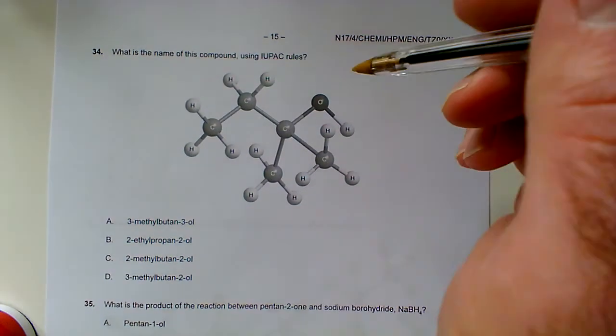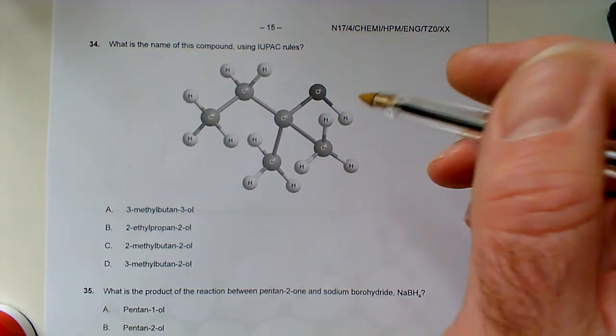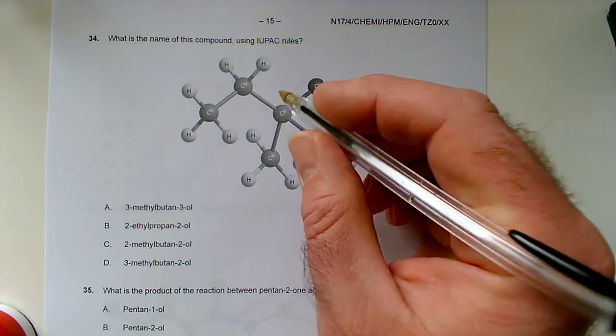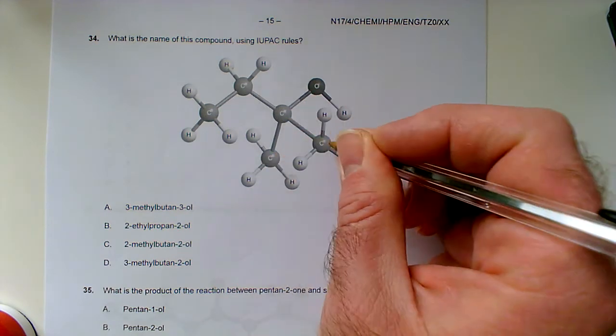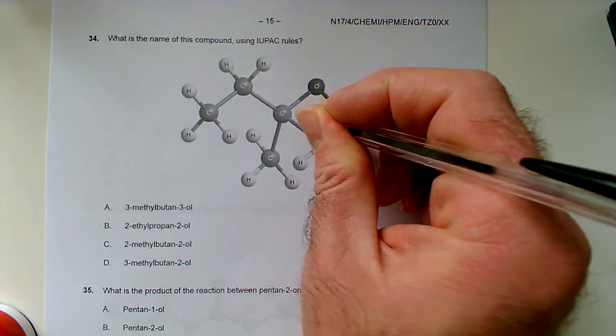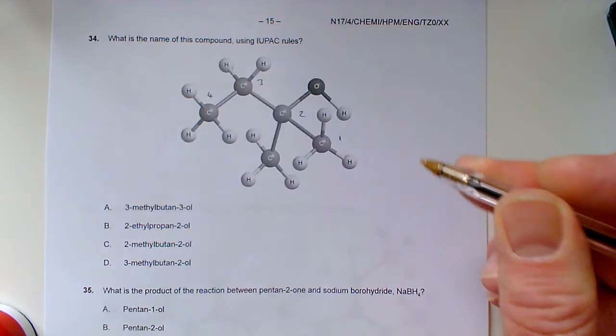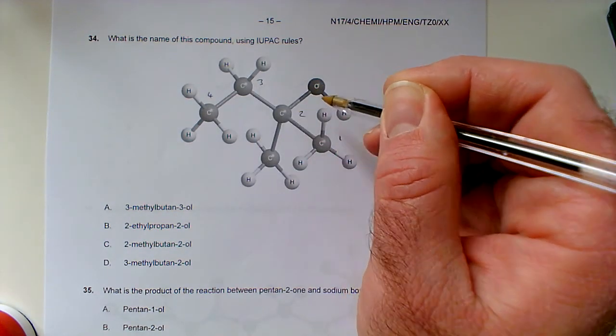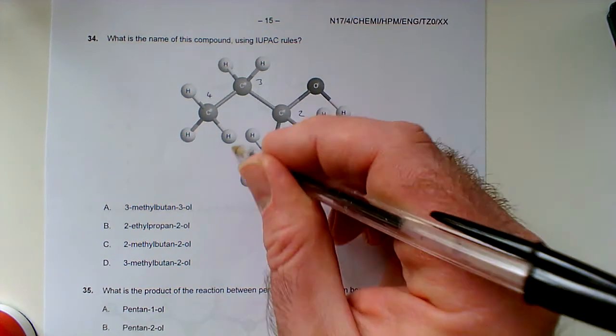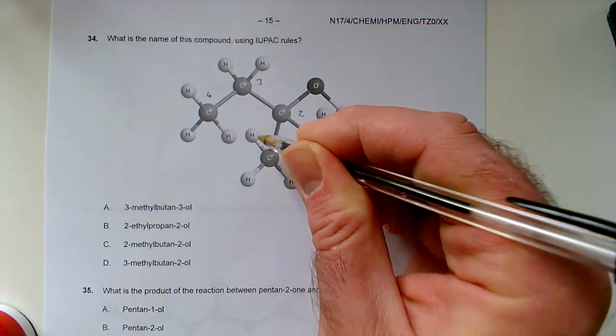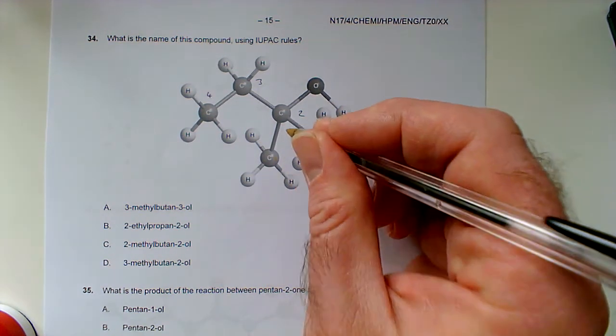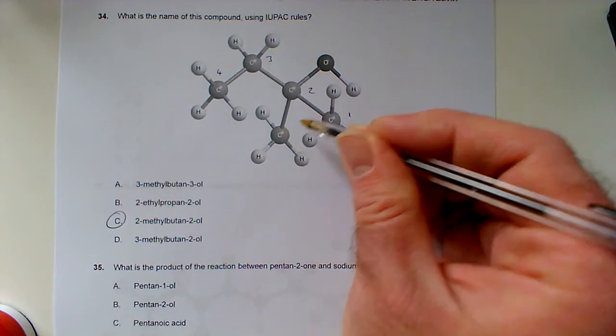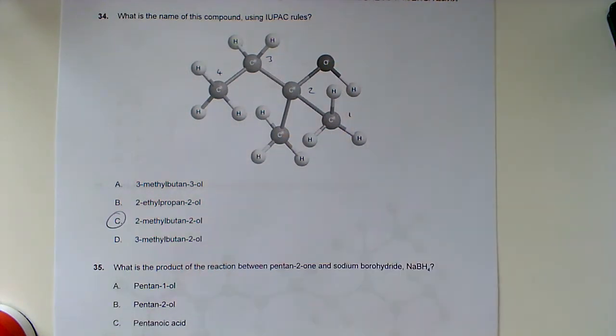Question 34: What is the name of this compound using IUPAC rules? Look for the longest chain. It's an alcohol. The longest chain, keeping numbers as small as possible—call that carbon 1, 2, 3, and 4. The alcohol's on carbon 2, so it's butan-2-ol, and we've got this extra methyl group, so that's 2-methylbutan-2-ol.